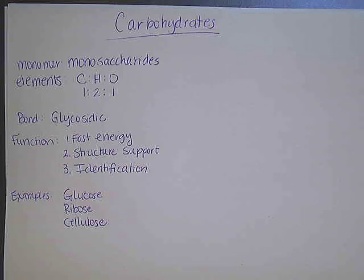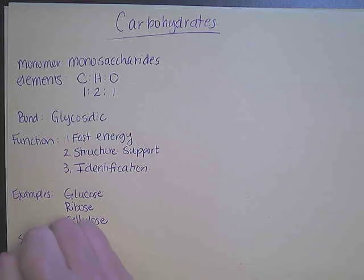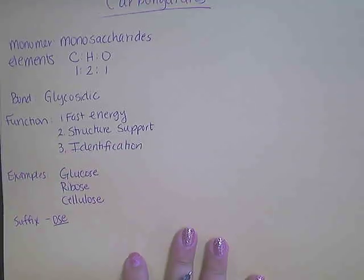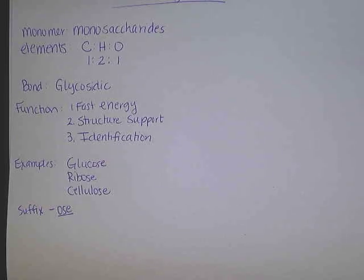Examples of carbohydrates are glucose, ribose, and cellulose. The key thing about carbohydrates is that you can easily identify them with their suffix '-ose,' O-S-E. This is not the case for all carbohydrates — there are some exceptions. We're going to talk about chitin and starch. But most of the time, you can identify a carbohydrate with that ending of '-ose.'